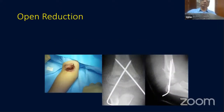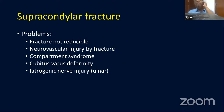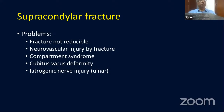Complications include malreduction, neurovascular injury, compartment syndrome, cubitus varus, and iatrogenic nerve injury. Documentation is critical — ensure any nerve injury is documented prior to your reduction or manipulation so you cannot be blamed for pre-existing injury. If a nerve injury occurs during manipulation, there may be a risk of the nerve being entrapped in the fracture fragment, which may require exploration.